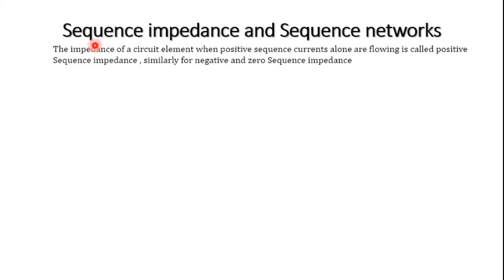Let us understand the next concept: sequence impedance and sequence network. Till now we discussed the symmetrical components of voltages and currents. These are encountered by components depending upon the type of power system equipment — that is, generator, transformer, transmission line, and other devices.